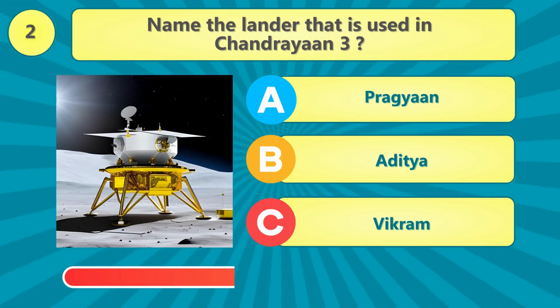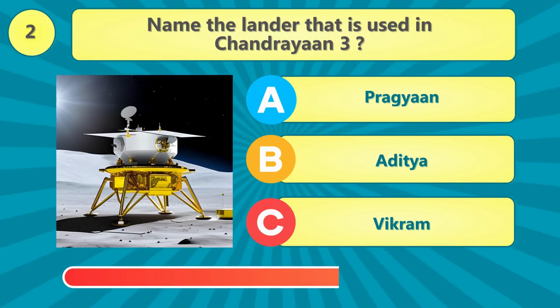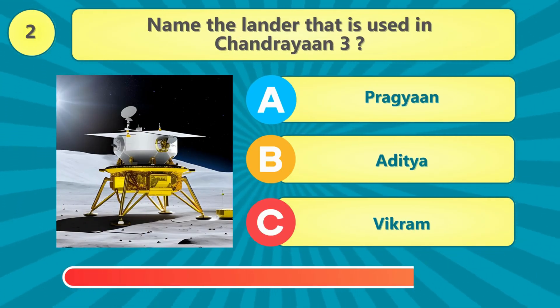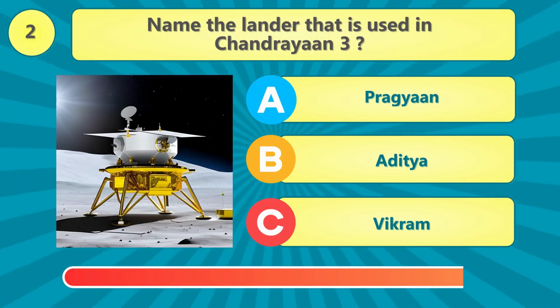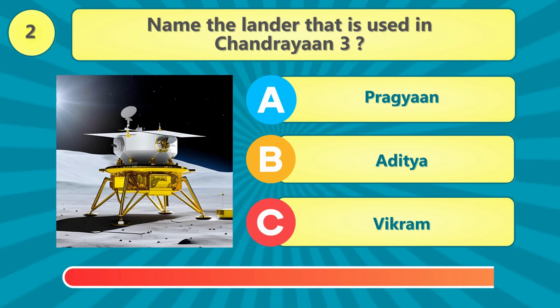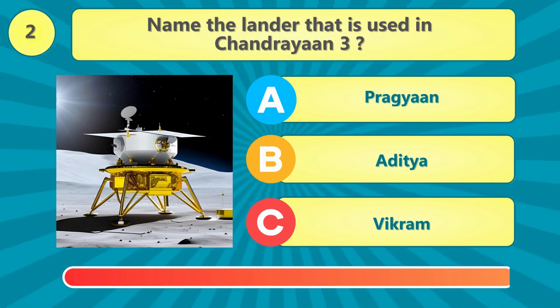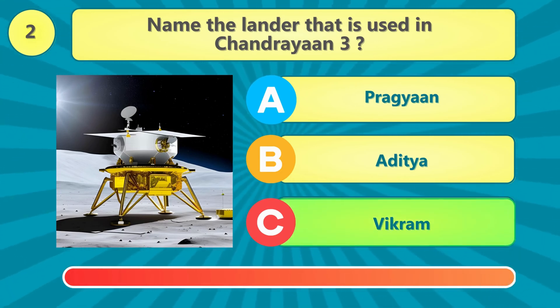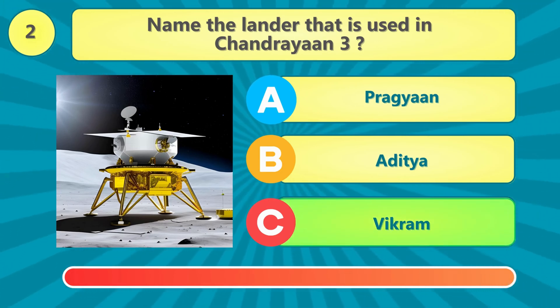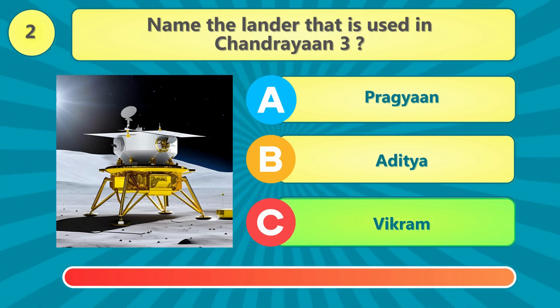What is the name of the lander used in Chandrayaan 3? That's correct, it's Vikram.